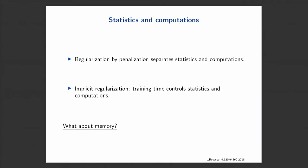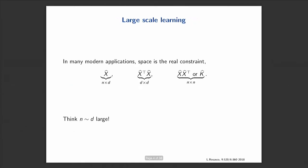What we want to discuss today is the problem of memory. Training time controls statistics and computations via the number of iterations, but in most practical applications the main concern is actually space. Let's look at the kind of objects we had to manipulate in the last couple of days: the data matrix, its transpose, and a couple of square matrices — the D-by-D covariance matrix and the N-by-N Gramian matrix. Think of N and D as both very large.